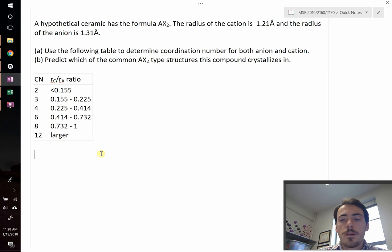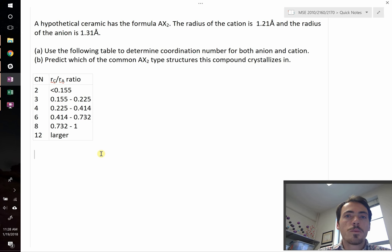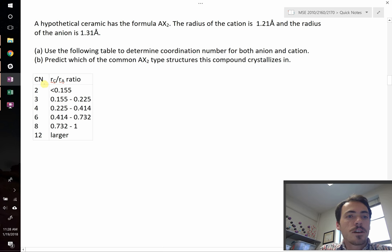This is really one of the exciting parts about understanding basic rules of structure. Once we understand how the size dictates coordination number, we can use coordination number to get to possible crystal structures. In this table, we see on the left-hand side we have coordination number, and on the right-hand side we have the Rc over Ra ratio. So what we need to do is calculate the Rc over Ra ratio for this compound.